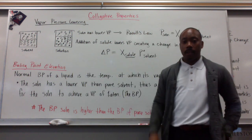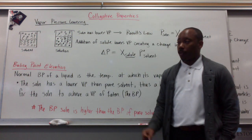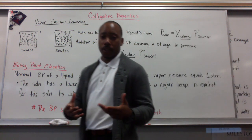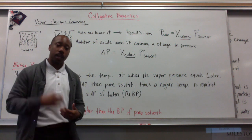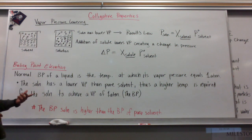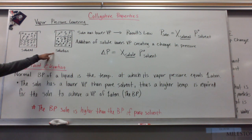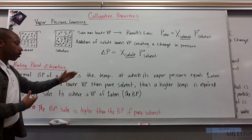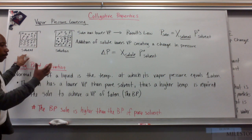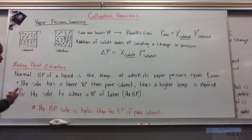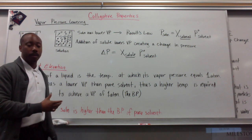Now the normal boiling point of a liquid is the temperature at which its vapor pressure equals atmospheric pressure, which is at one atmosphere, or 760 torr. The solution has a lower vapor pressure than the pure solvent, as we've just talked about. Thus, a higher temperature is required for the solution to achieve a vapor pressure of one atmosphere.